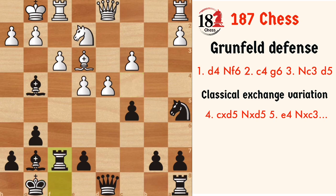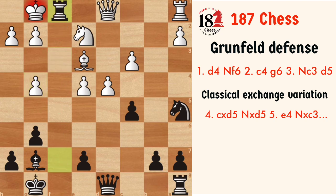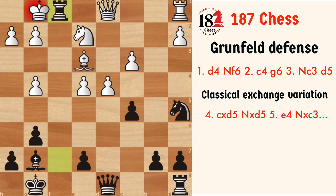After Rxf7, Rxf7, and fxg4, this variation is called the civil variation of the Grünfeld Defense, and it is playable, but we will look at this last.